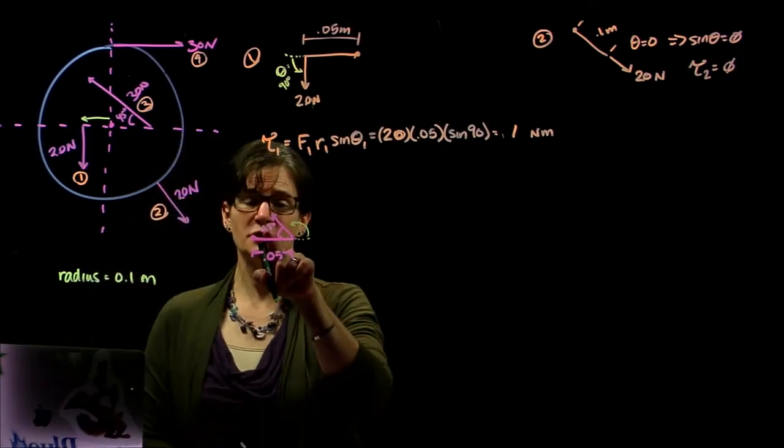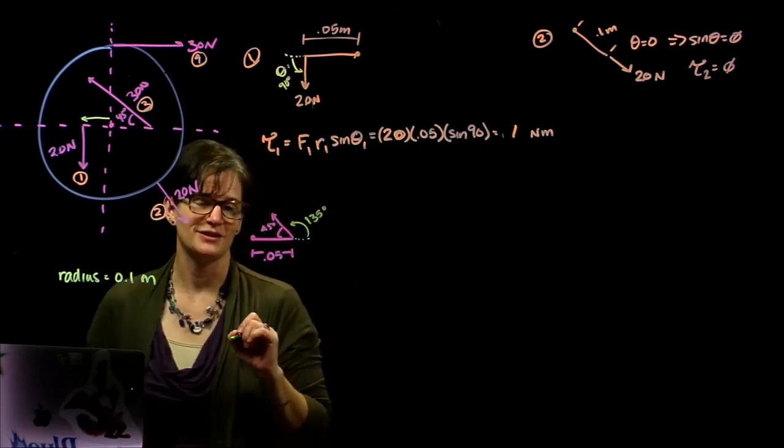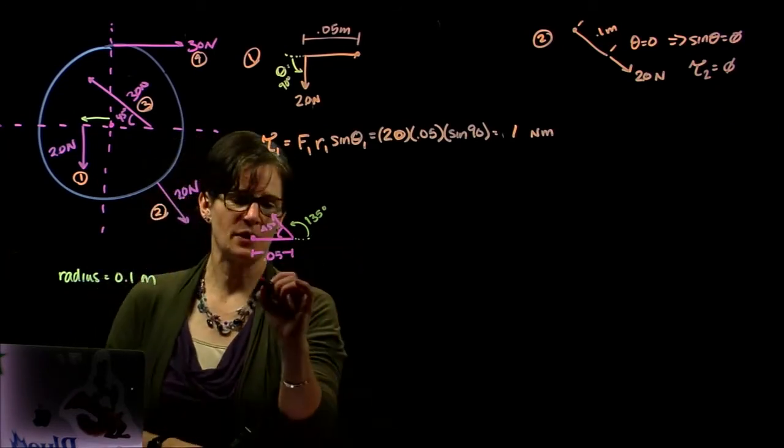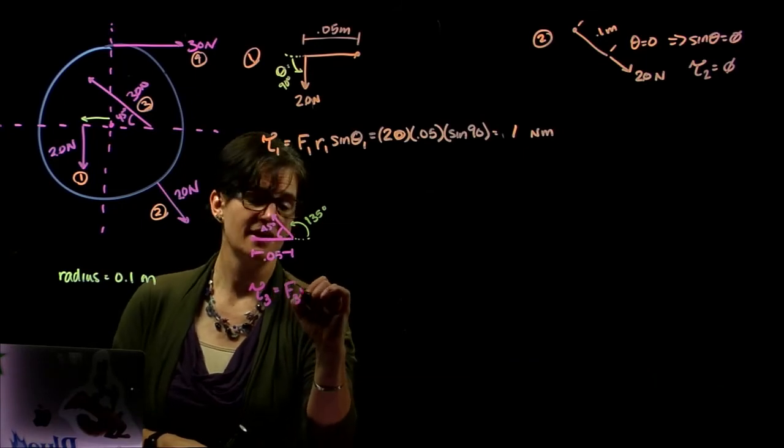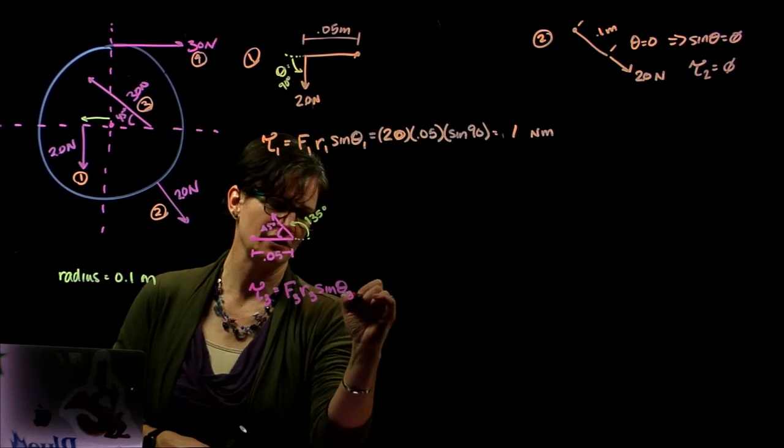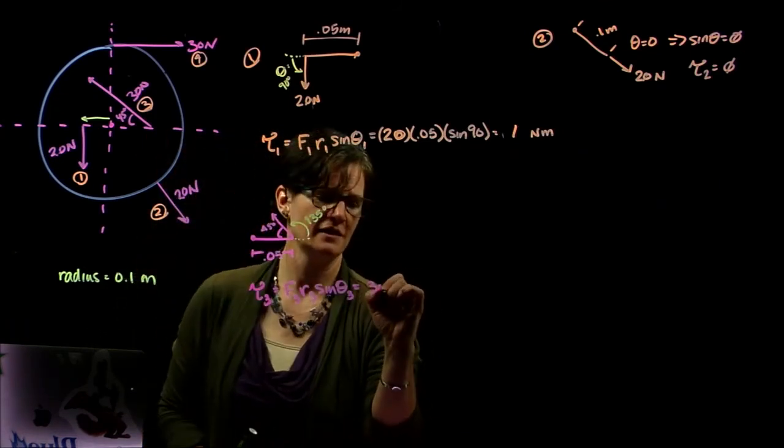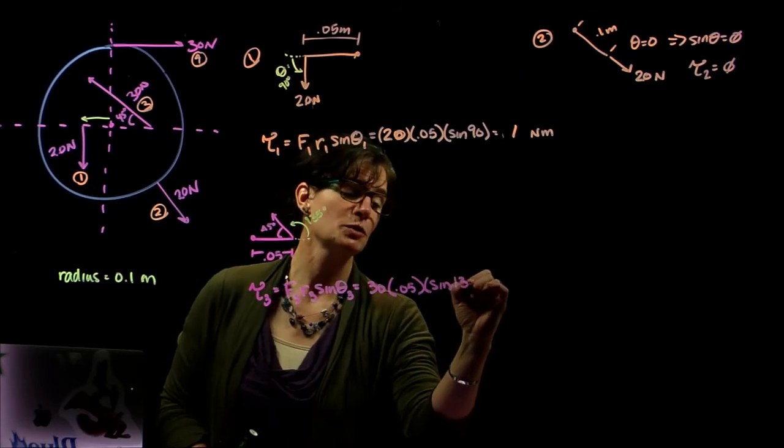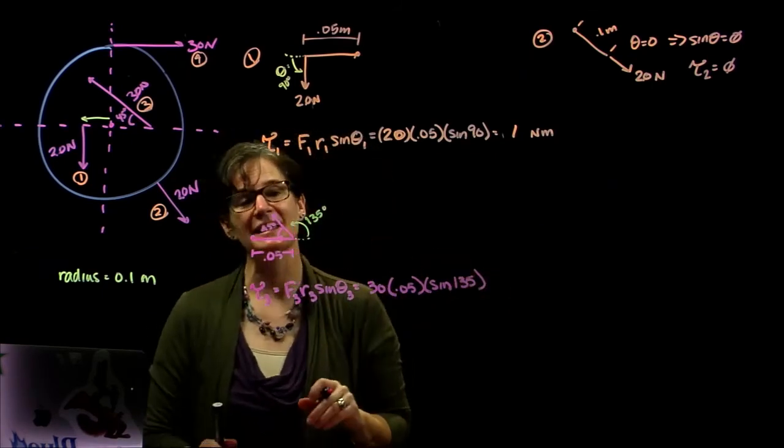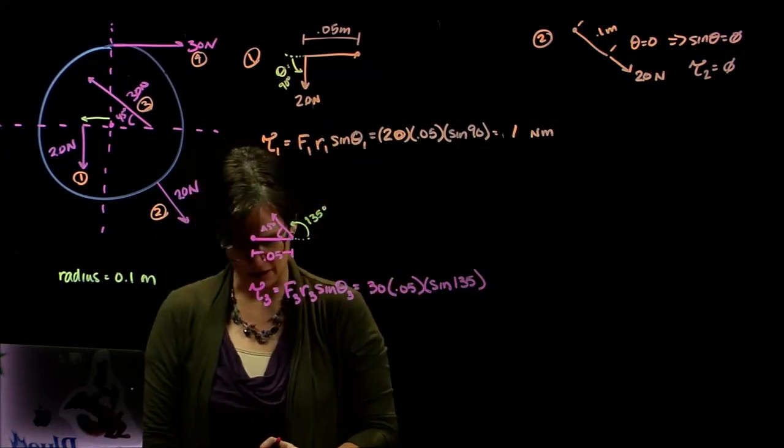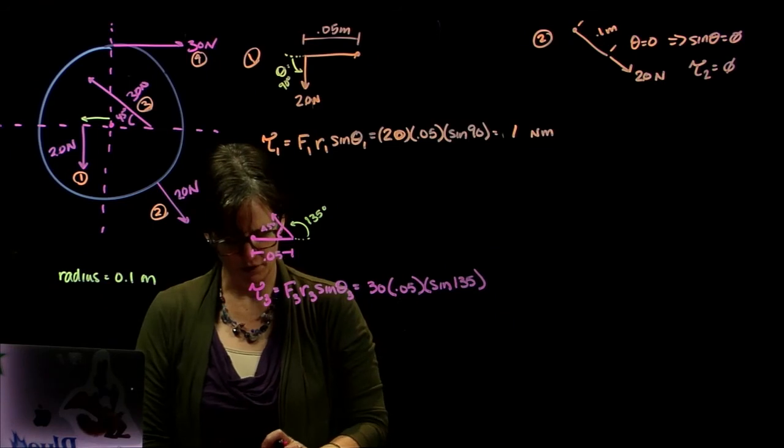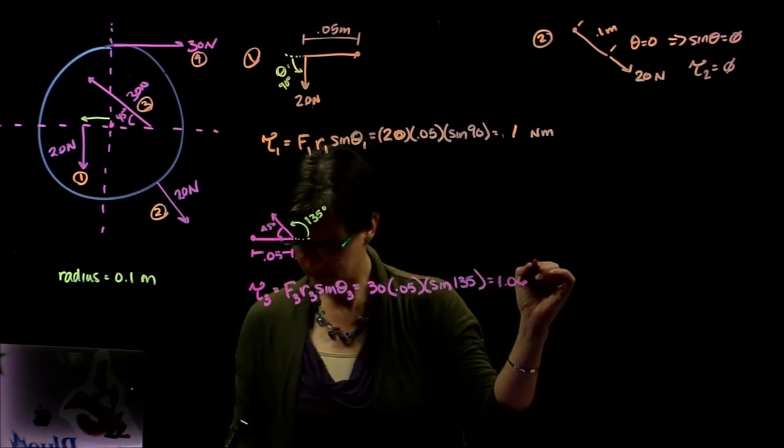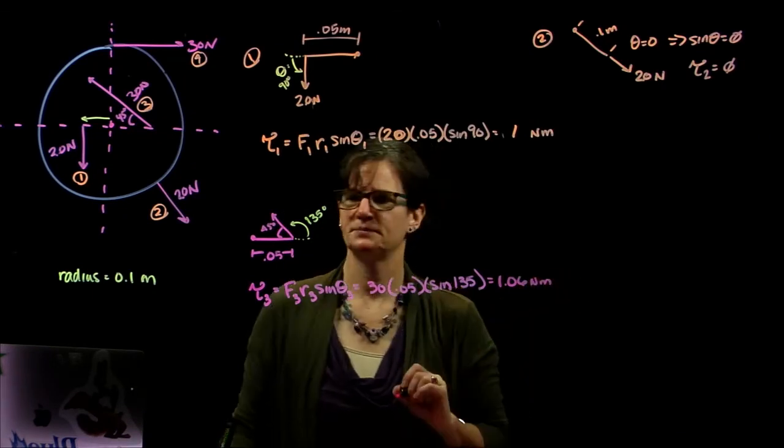For force number three, torque three is force three times radius three times the sine of the angle for force number three. So we get the force of 30 times a radius of 0.05 times the sine. And this too is a positive value because we're rotating, that's a positive angle, and it would cause the disc to rotate in the counterclockwise direction. 30 times 0.05 times the sine of 135 is 1.06 newton meters.